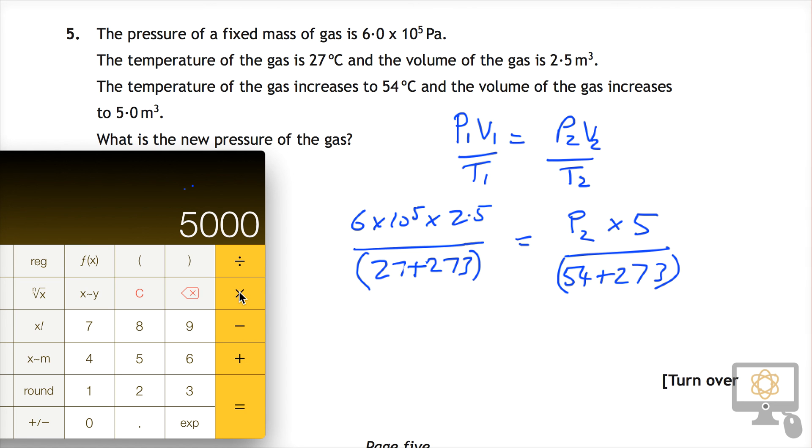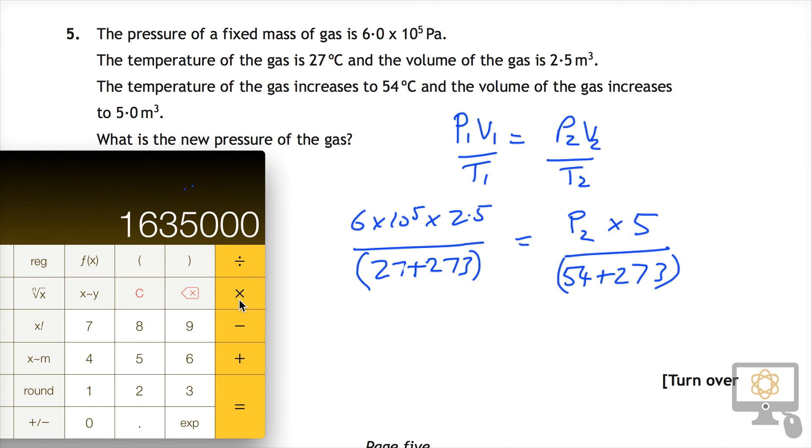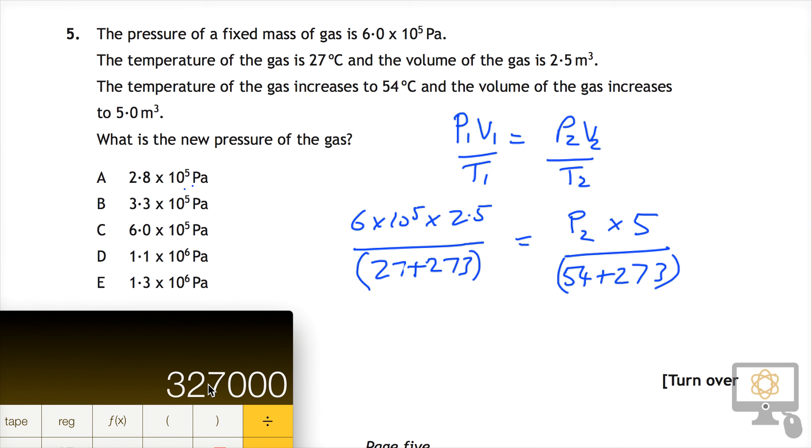We need to get this on its own, so we need to bring this up to the other side. We'll multiply the number we've got by all of this, so multiply it by brackets 54 plus 273. I could do that in my head but it's too late in the evening. That gives us that number. Then if we divide that by 5, divide by 5, we should get our answer.